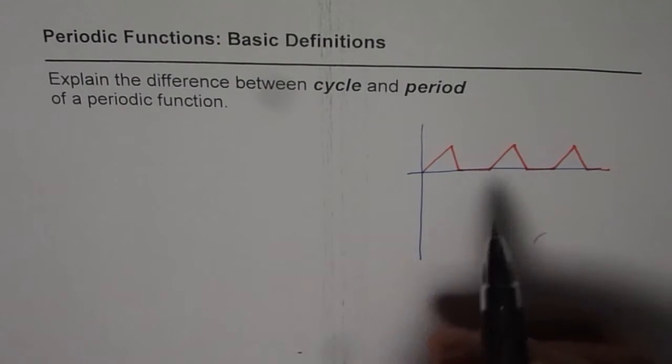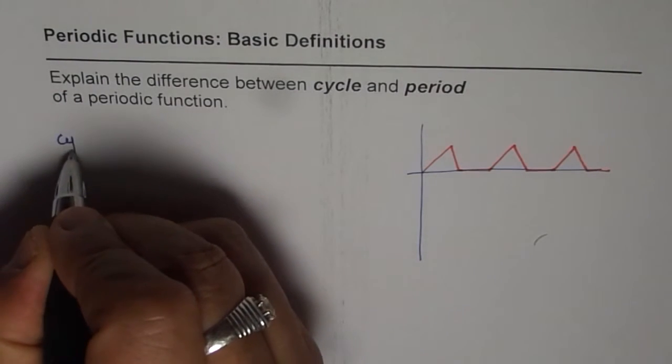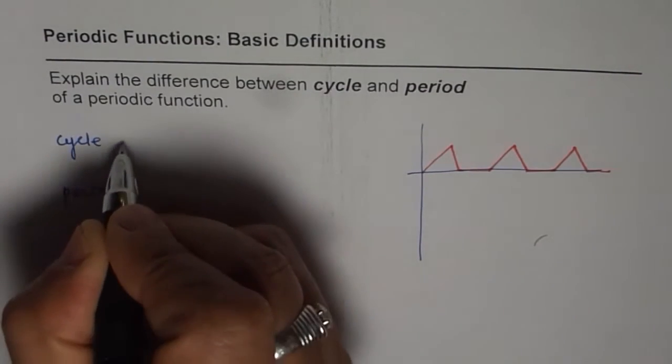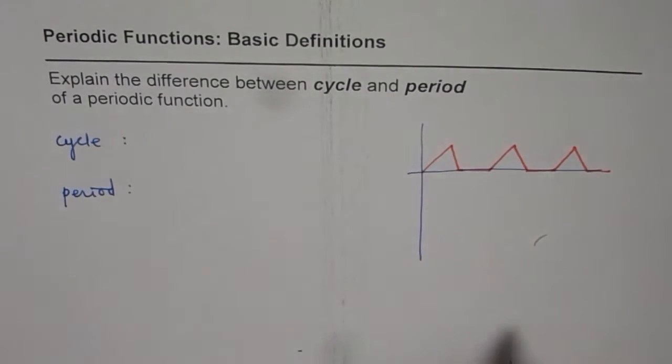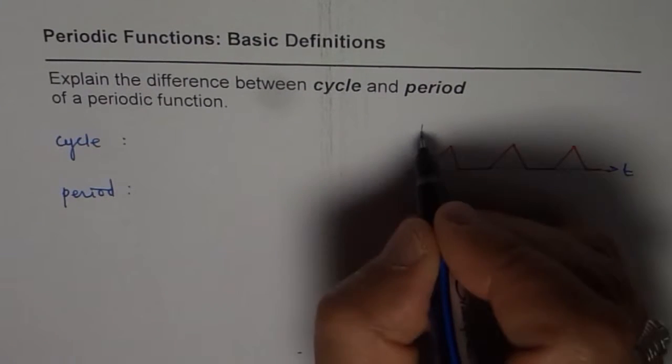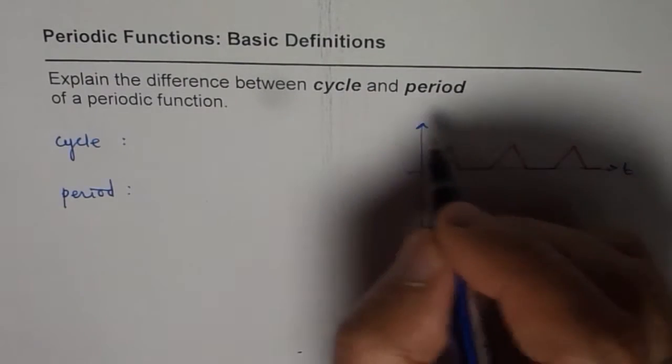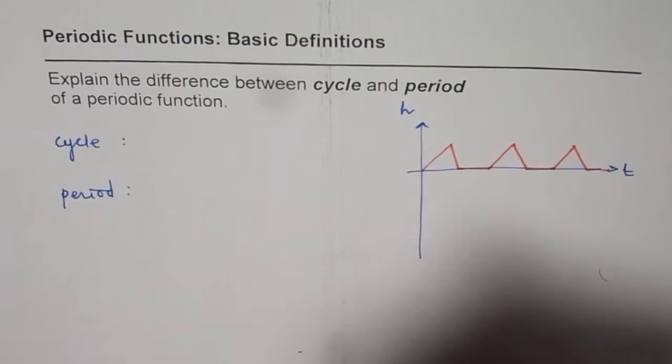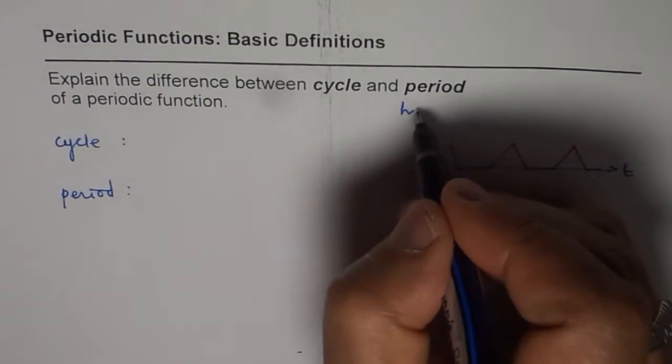Now in this particular function, you have to tell me what is a cycle and what is a period. If you can tell me that, then we know exactly what is the difference between the two. Now, period or time period—let's say this value here is t, and this is, let's say, amplitude a. Height is a function of time, so we'll write h(t).